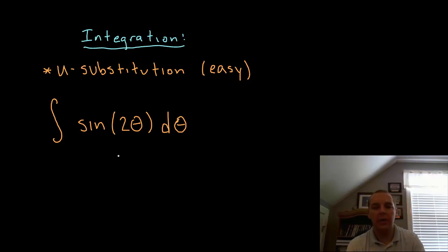one thing that kind of jumps out at me is these layers. I have an outer layer that's a sine and an inner layer that's not just theta. If they had asked me to integrate just sine theta, the answer would obviously be negative cosine theta plus C and we'd be done. But because this is a 2 theta and we have layers and we call that composition, then that hints at the fact that we're going to use u substitution.